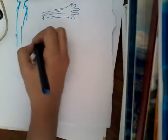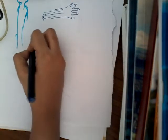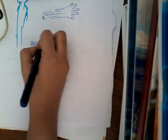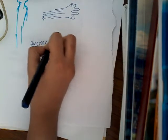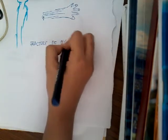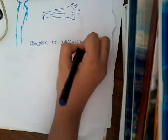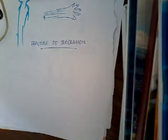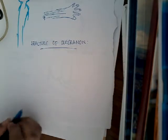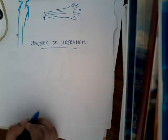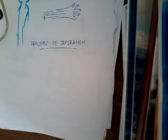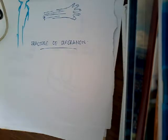Hello friends, welcome to a new lecture today. I would like to discuss the fracture of olecranon process. Fracture of olecranon process is usually seen in adults, and it mainly results from trauma. Whenever there is trauma, you have this fracture of olecranon process.